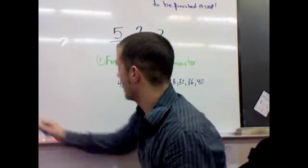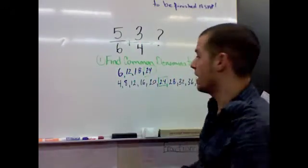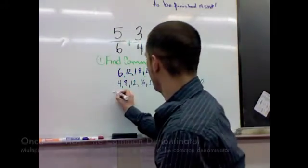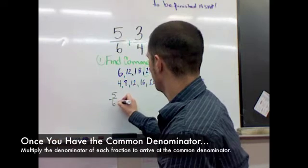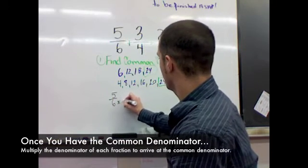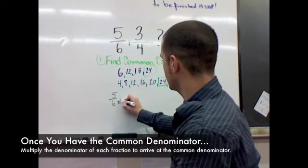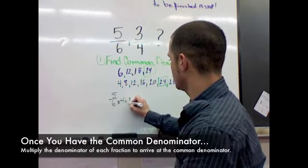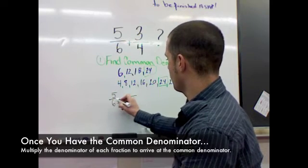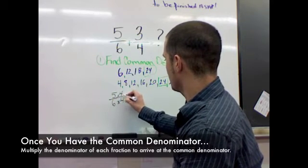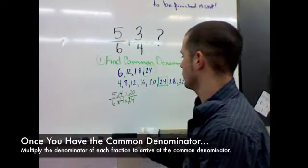Okay, so now that we've done that, let's actually do that multiplication. So if you've got 5 over 6 and you want 6 to become 24, 6 times 4 equals 24. What you do to the bottom, you do to the top. 5 times 4 equals 20 over 24.